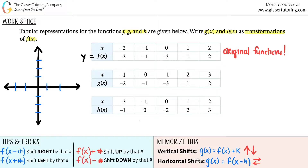So we have negative 2, negative 2 — so we're all the way down here. Then we have negative 1 and 1. Then we have 0, negative 3; 1, 2; 3 — so we're going all over the place here. Then 1 and 1, so now we're all the way up here. And then we have 2 and 2. Let's connect the dots. So this is f of x — the original function.